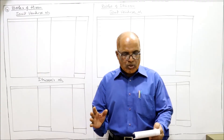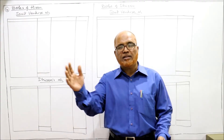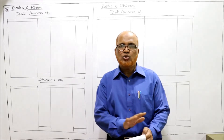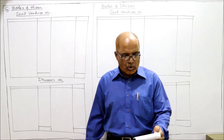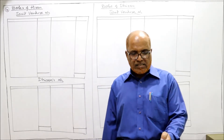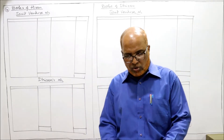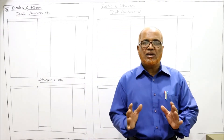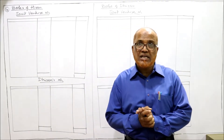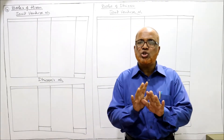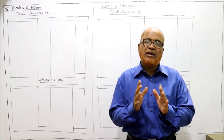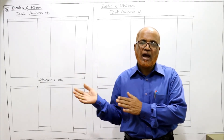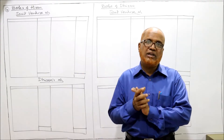On 31st March, whatever payment was due to Hiren, that amount was sent to him and the joint venture is closed. The question asks you to write up the ledger accounts — not journal entries — directly the ledger accounts in the books of Hiren and in the books of Dhiran respectively.